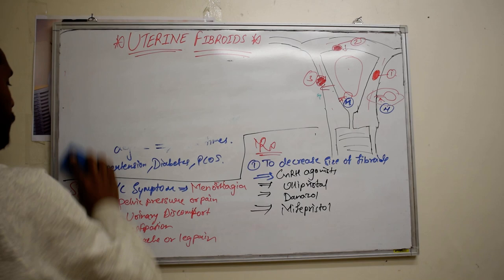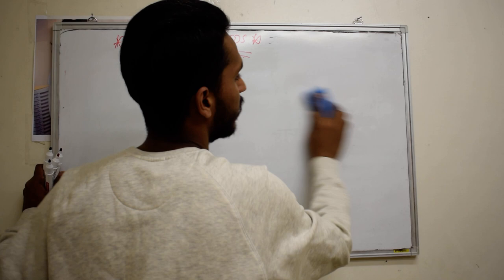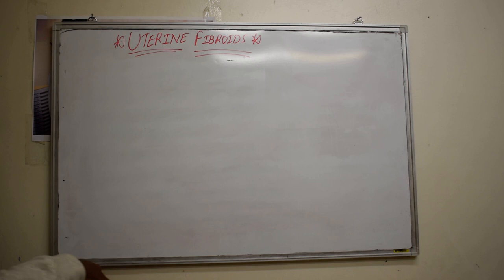There are various surgical options available for patients of fibroids, starting from hysterectomy, then myomectomy, or we can go for uterine artery embolization, and the very new magnetic resonance guided focused ultrasound.